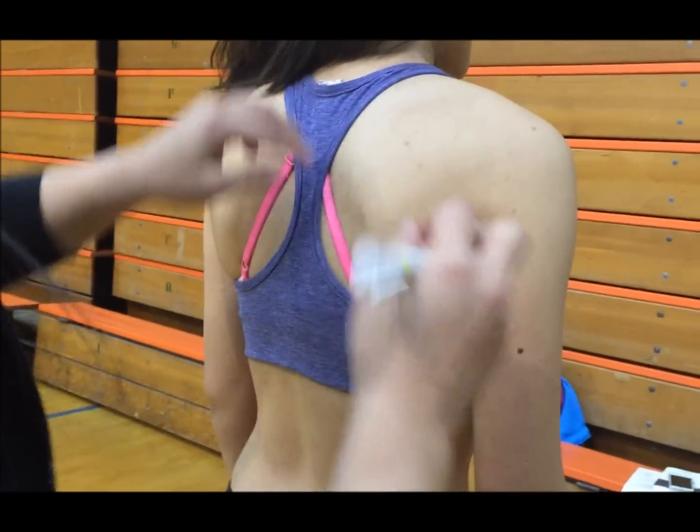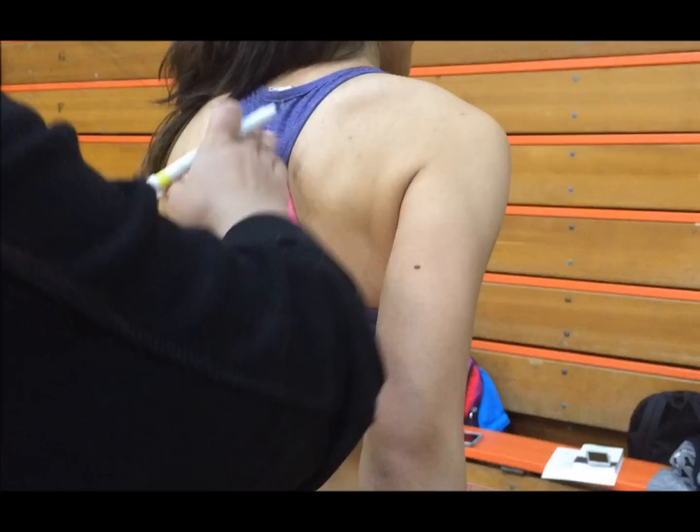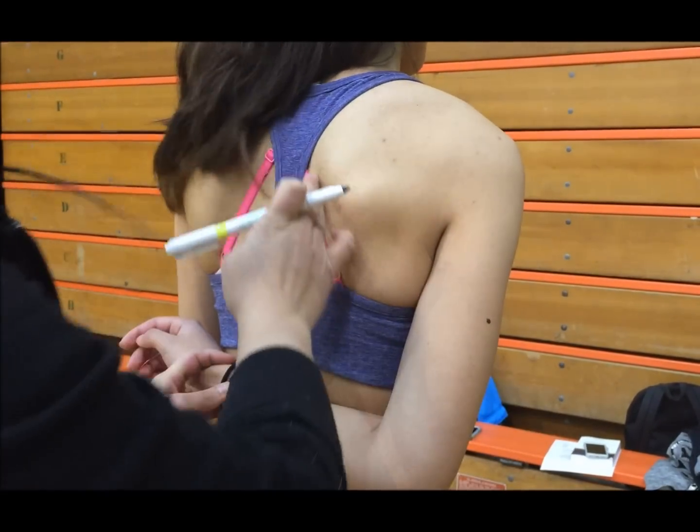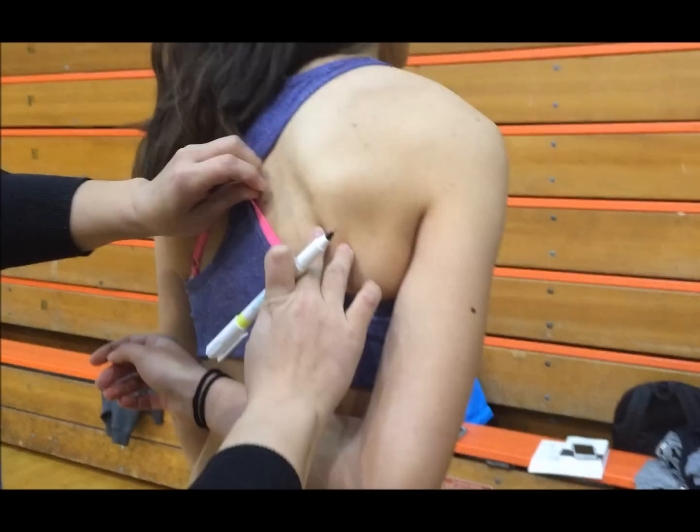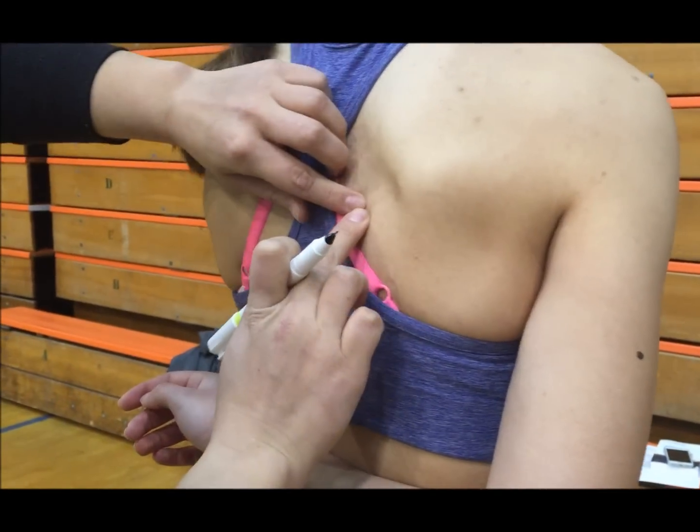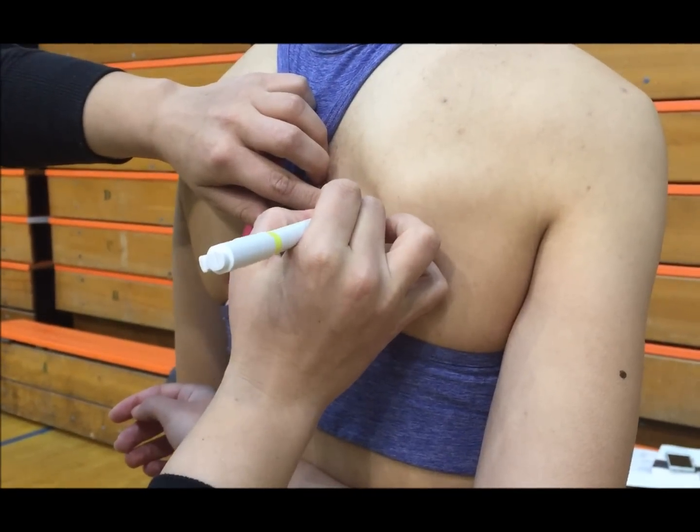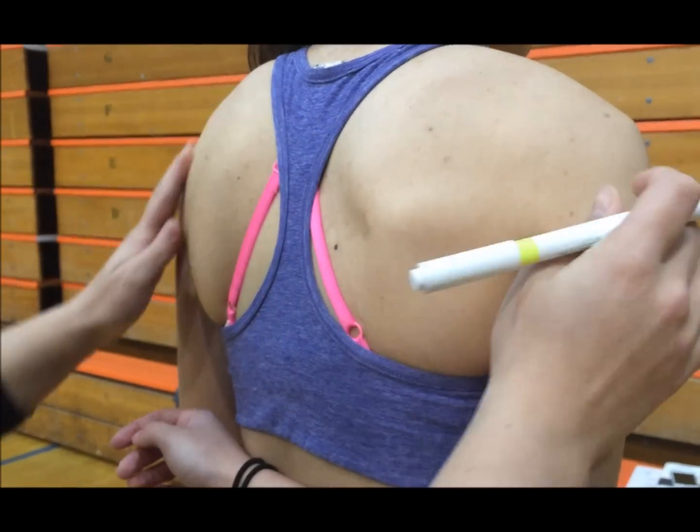The subscapular fold is a diagonal fold. If you cannot locate the scapula, you can have them bring their arm behind their back and the scapula would be noticeable. This will be one to two centimeters below the inferior angle of the scapula.